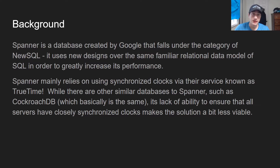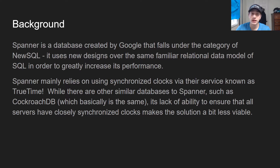So what is Spanner? Basically, Spanner is a database created at Google, roughly in the last decade — the paper came out around 2012. It falls under the category of NewSQL, which refers to new architectures for traditional relational databases that try to make improvements to make them more viable in a super scaled-out environment. SQL has many pitfalls, and at super large scale it tends to fall apart because of relational constraints, locking, and things along those lines. Spanner mainly relies on synchronized clocks.